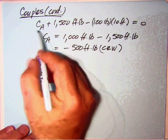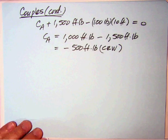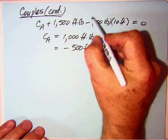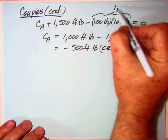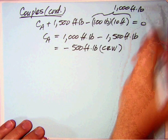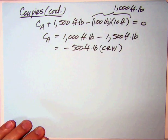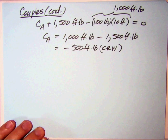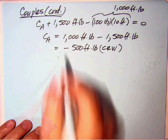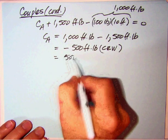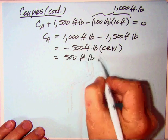I just recopied the equation at the bottom of the previous page. CA plus 1,500 foot-pounds minus 100 pounds times 10 feet. And this up here, of course, comes out to be 1,000 foot-pounds. So that's a minus. So we take it solving for C sub A. We now have 1,000 minus the 1,500. So what we get is a minus 500 foot-pounds. And the direction that we assumed was counterclockwise. So that's okay. But what we want to think of this as is really 500 foot-pounds clockwise.